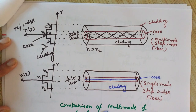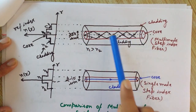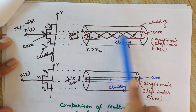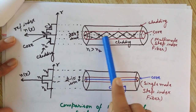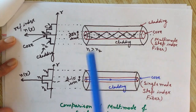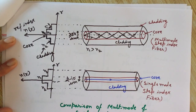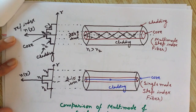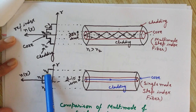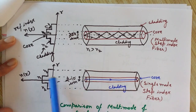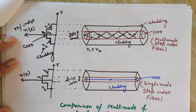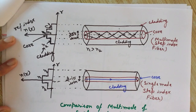It is of two types: multi-mode and single mode. Mode means how many modes it can allow to propagate through it. In the case of multi-mode step index fiber, because of its large diameter, it can allow many modes. But in single mode step index fiber, because of its small diameter, only one mode is allowed. It is also a step index fiber because there is an abrupt change at the core-cladding interface from n1 to n2.